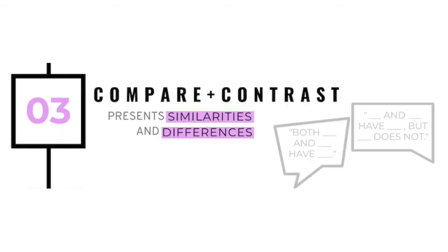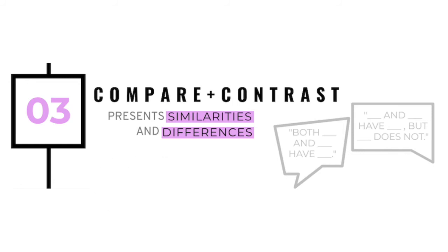The compare and contrast text structure presents the similarities and differences between two or more items. In this structure of writing, the likenesses and differences are presented and discussed. Venn diagrams are common prewriting tools to map out the similarities and differences of a topic.